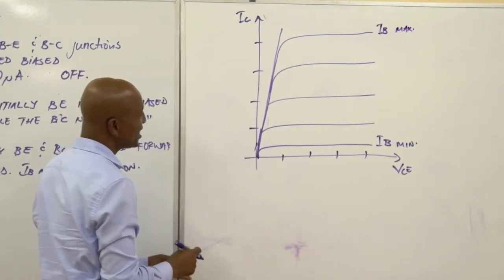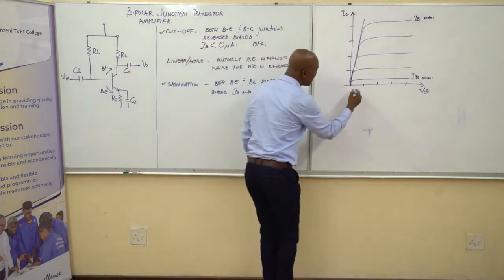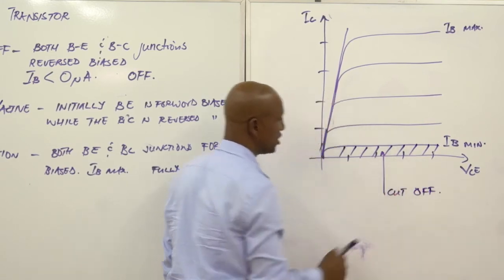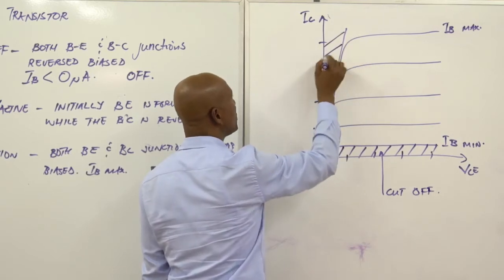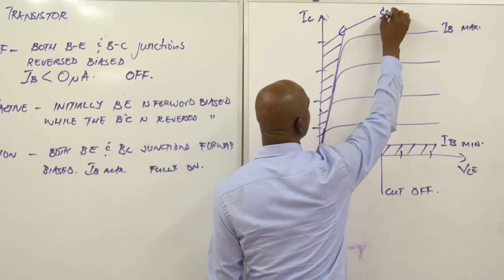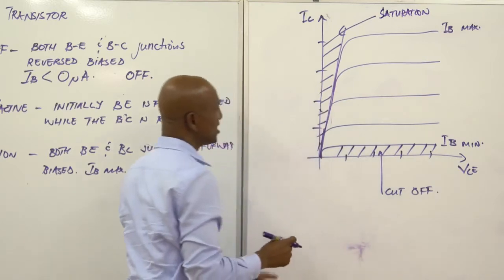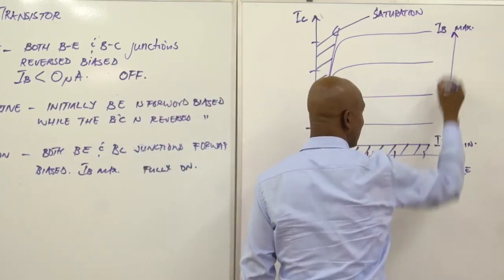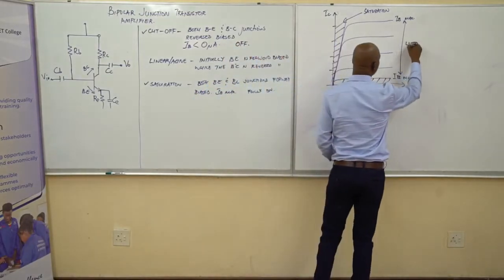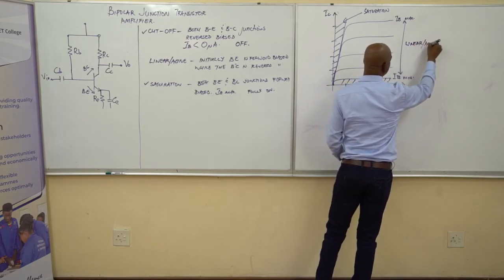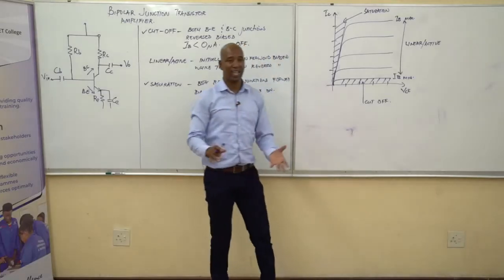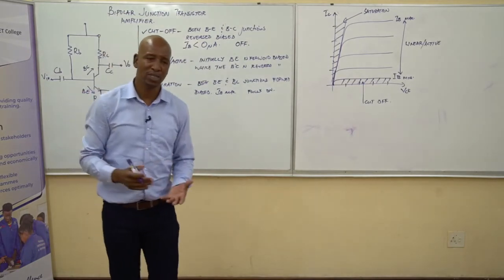You can see that the region just above IB minimum but before IB maximum is where it's linear or active. This is the linear, or what we call active region — this is where the transistor is being used as an amplifier.